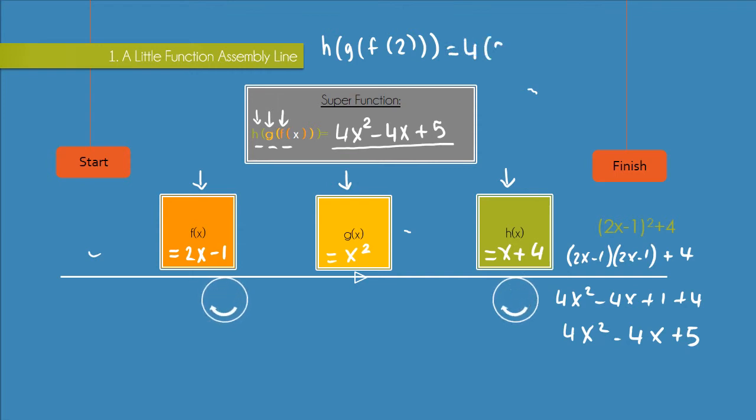So we're going to have 4 by 2 squared minus 4 by 2 plus 5. So that's equal to 4 by 4 minus 8 plus 5 which is 16 minus 8 plus 5 which is 8 plus 5 which is just equal to 13. And 13 was our final answer when we went through the individual functions and saw what happened as it went along.